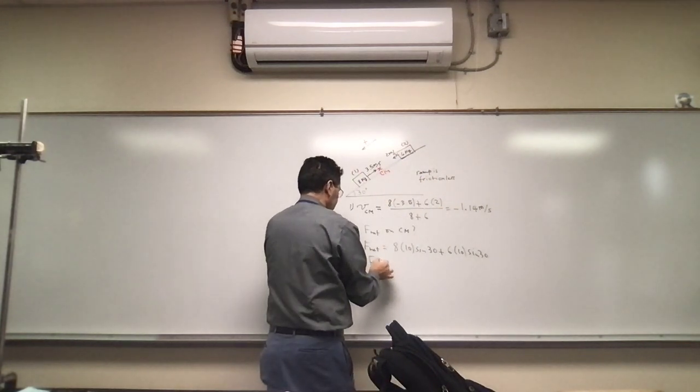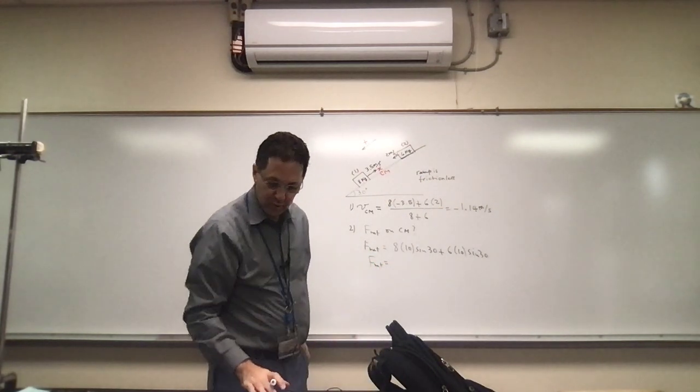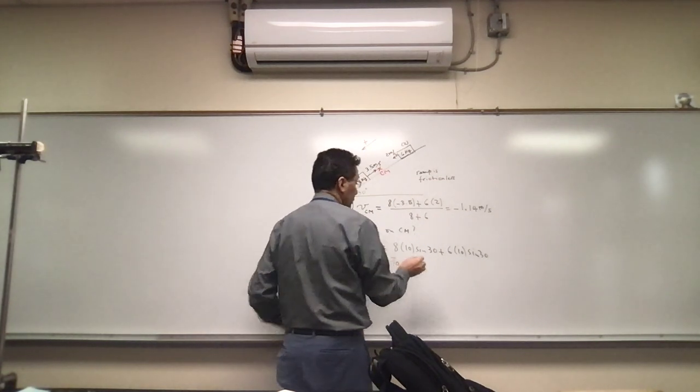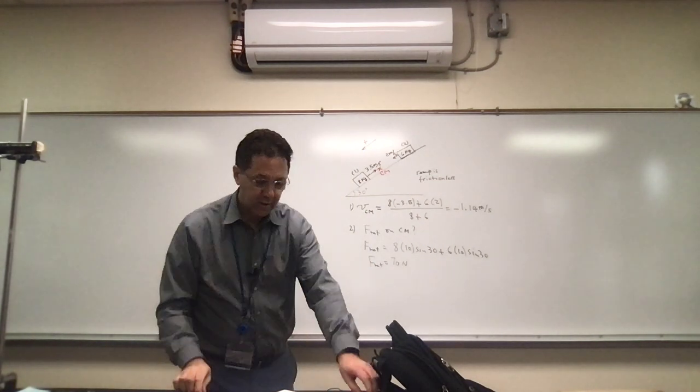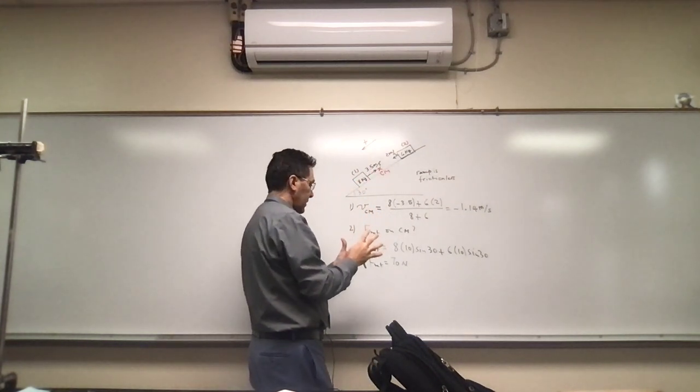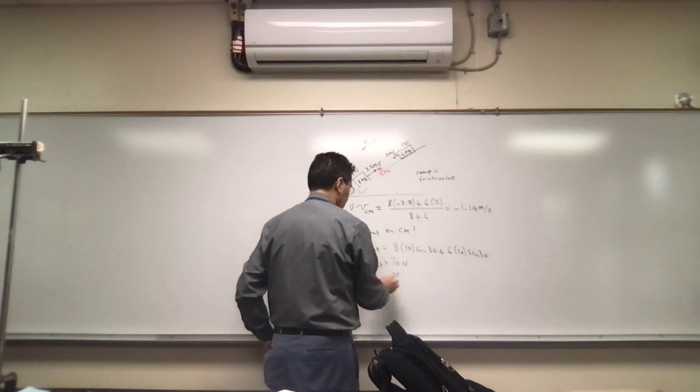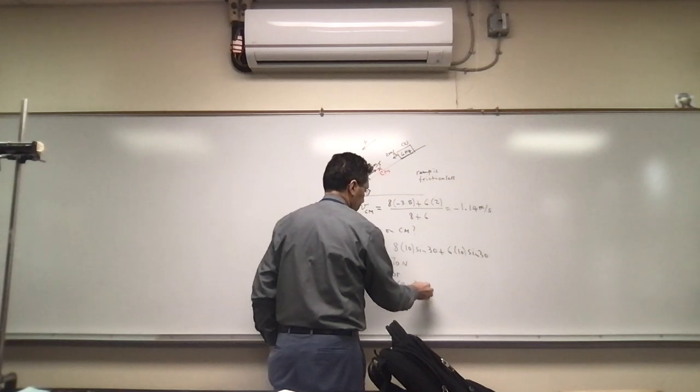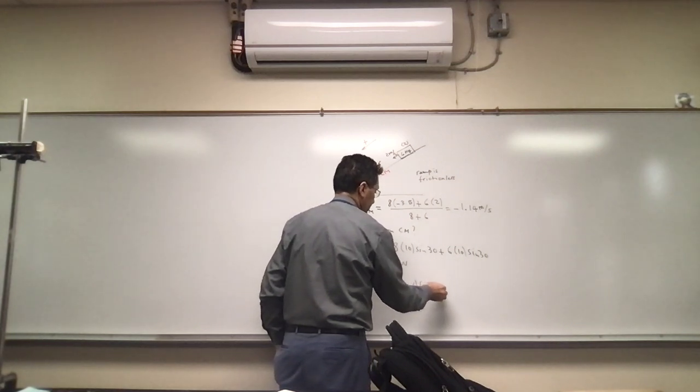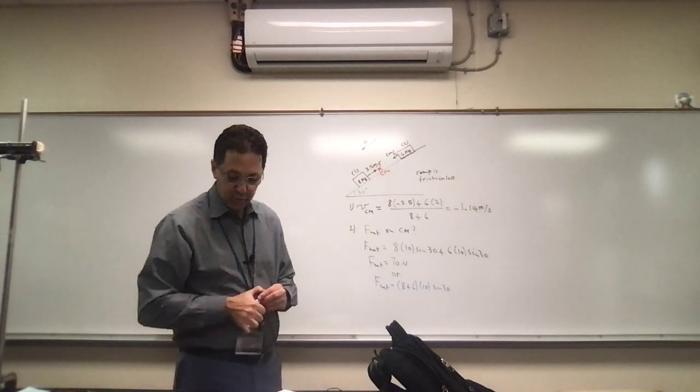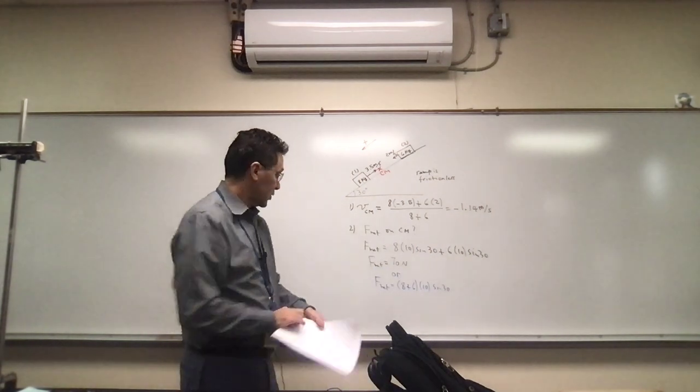Another way you can look at it - and I'll write this in blue - is think of the two of them as one, really. That's how you have to think about it. We can do F_net equals the two masses times g times sine of 30, which will get you the same number, 70 newtons.